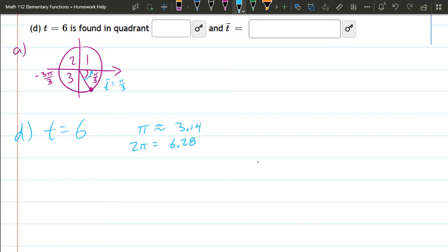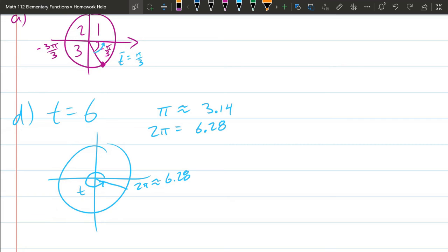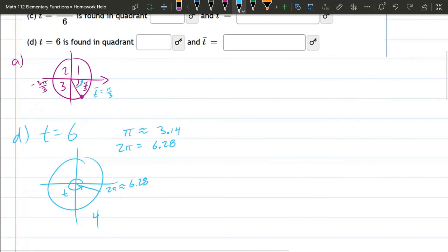How do we know what quadrant it's in? Well, it's really close to 2π. Is it more or is it less than 2π? So 2π is close to 6.28. So we're short a little bit. We're not going all the way there, but almost all the way there. So it will be something like that. So that's t right there. So what quadrant we're in? Well, it's going to be quadrant four, just like the last one, or I should say the first one.